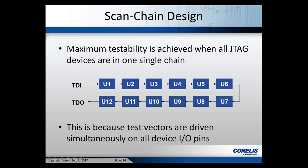The reason we want everything in a single chain is that test vectors are driven simultaneously on all device I/O pins. For example, if there's connectivity between U3 and U10, when we shift in data to the boundary scan register, that data is applied to all pins simultaneously. All vectors are driven from each pin at the same time, and received on the other devices simultaneously.